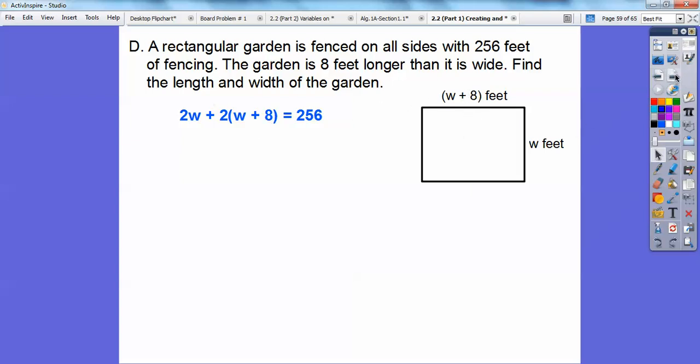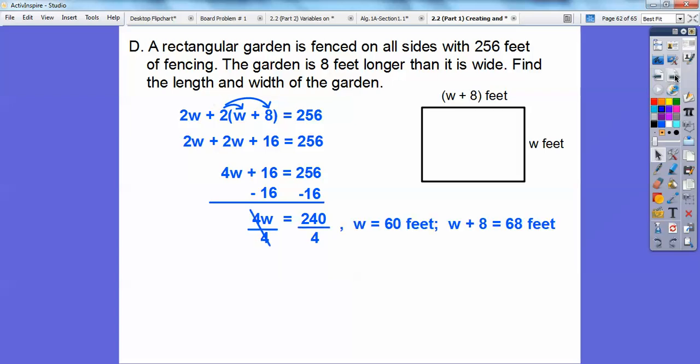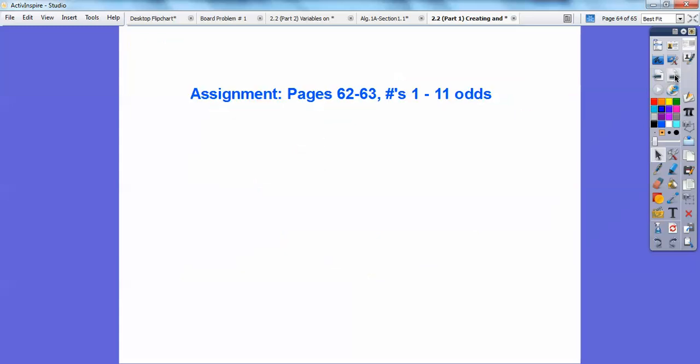Let's go ahead and use the distributive property. And so we get 4W plus 16 equals 256. So when we subtract 16 we get 240. Finally we divide by 4 and we get W equals 60. W plus 8 equals 68. And you got it. Let's check our answers here. So it adds up to 256. You guys, if you are in my class, that would be the assignment I would probably assign.